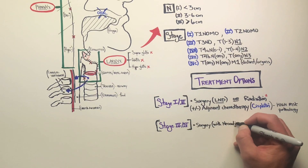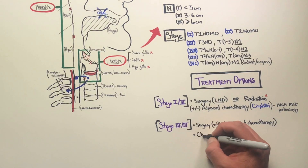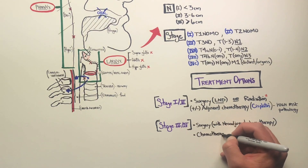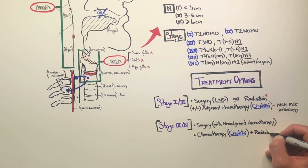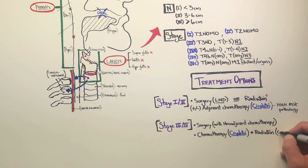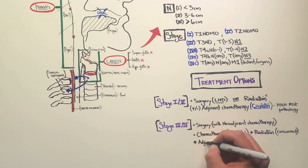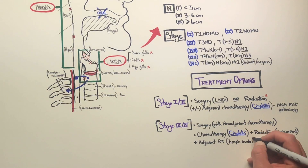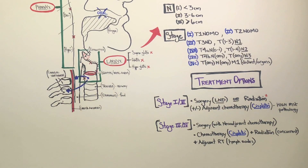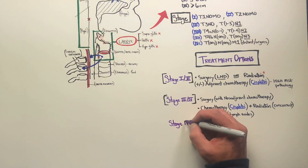For stage 3 and stage 4, more advanced cases, surgery is done with neoadjuvant chemotherapy — again, that's cisplatin — used before surgery, often up front, followed by chemotherapy and radiation given concurrently. Radiation of the lymph nodes within the area is also included.